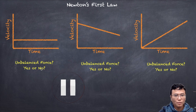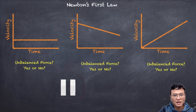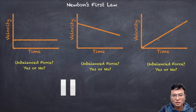The answer for the first case is balanced, so no unbalanced force. For the second case, the slope of the line tells you the acceleration. The slope is negative, so it has a negative acceleration, meaning the force is unbalanced — yes. For the third case, the slope of the line also tells you the acceleration, and the acceleration is positive, so the force is also unbalanced — yes.